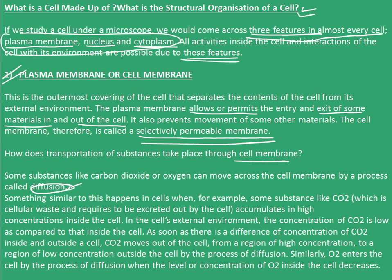Something similar happens in cells when, for example, CO2 — a cellular waste — accumulates in high concentrations inside the cell while its concentration outside is low. As soon as there is a difference in concentration of CO2 inside and outside the cell, CO2 moves out from the region of high concentration to the region of low concentration by the process of diffusion. Similarly, O2 enters the cell by diffusion when the concentration of O2 inside the cell decreases.